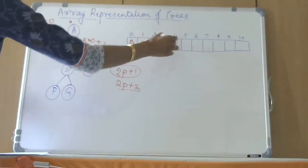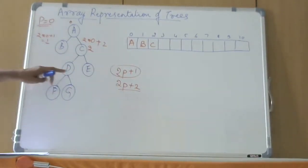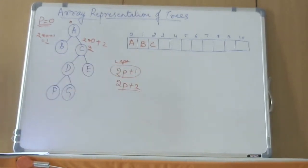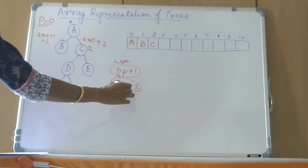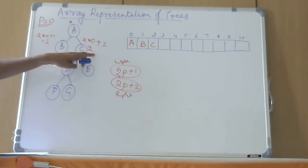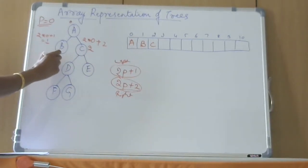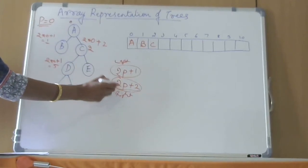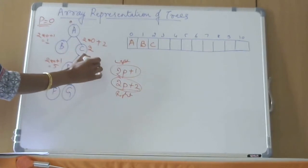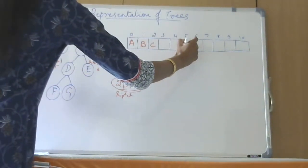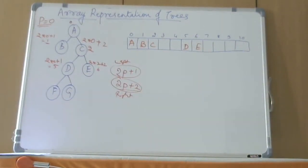Next, where should I place D and E? You should not simply place them at 3 and 4. You have to find out which location each takes. D is the left child of C, so 2p plus 1 where p is the position of C, which is 2. So 2 times 2 plus 1 equals 5. E is the right child, so 2p plus 2 equals 2 times 2 plus 2, which is 6. So D goes to position 5 and E goes to position 6. Positions 3 and 4 are skipped.